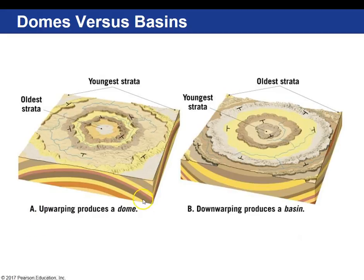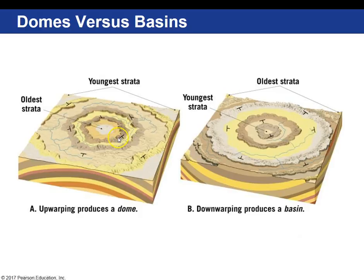Looking at two images: the first is a dome, an upwarping shown in a block diagram. This is what the surface looks like on a geologic map, and this is what it would look like underground — you can see the broad upwarping. In a weathered dome, the oldest material is in the center. These symbols represent strike and dip of the rock layers. The long line is the direction that the rock is trending, and the small 90-degree tick mark is the direction in which the beds are dipping down into the earth.